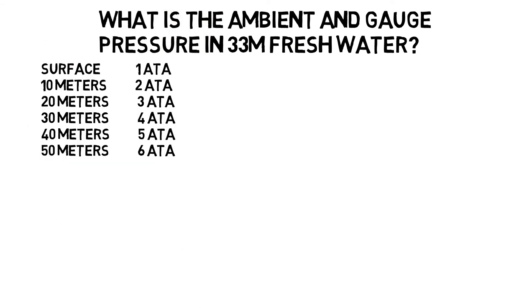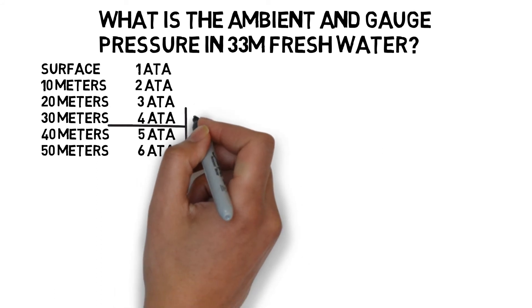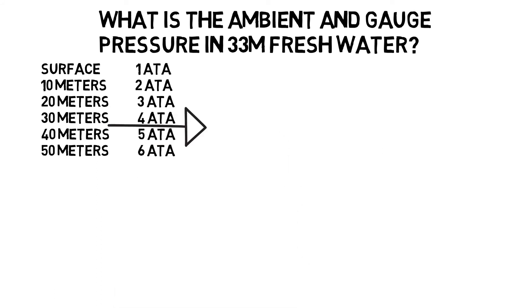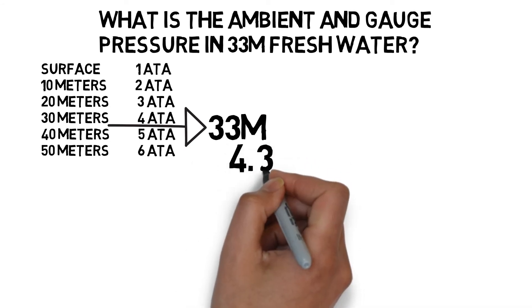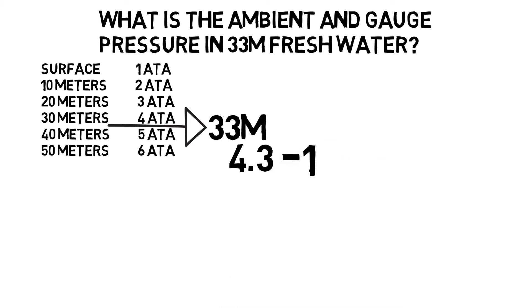Well, the first thing we need to do is pull up our chart of ambient pressure in salt water. We draw our arrow in. It's 33 meters, so it's between 30 and 40 meters, which means it's between 4 and 5 atmospheres. It's 4 point something atmospheres. Well, 33 meters: 4.3 atmospheres.